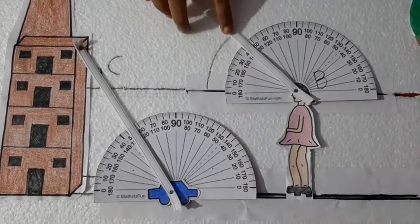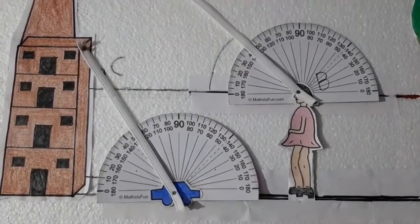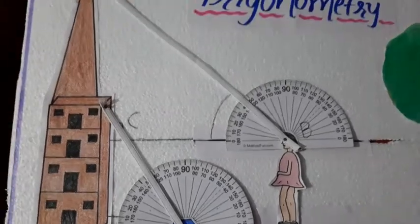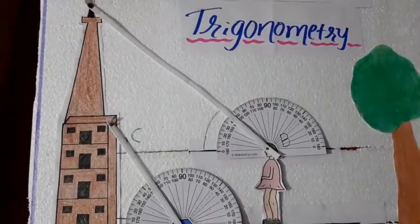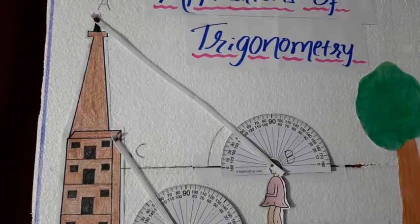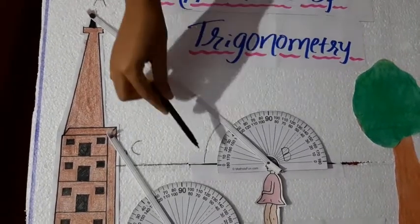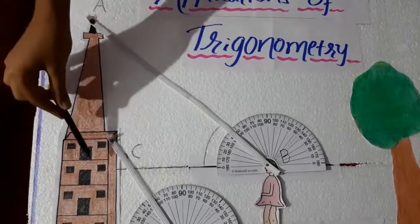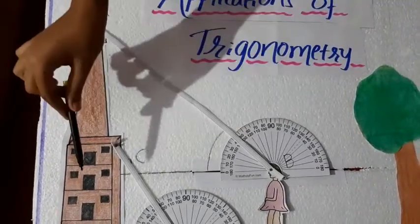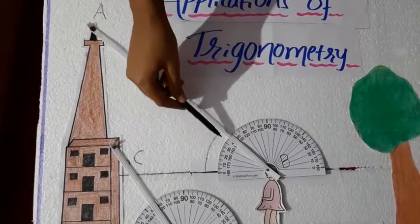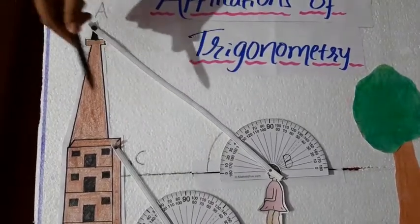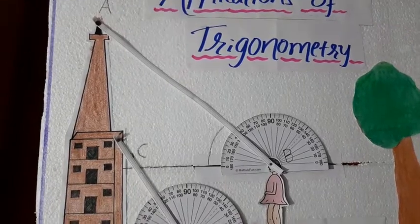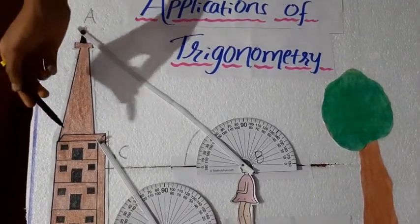We know that tan of 45 degree is 1. And let us consider the height of the building. That is AC equal to 10 meters. And we know that tan of any angle equal to opposite side divided by adjacent side.